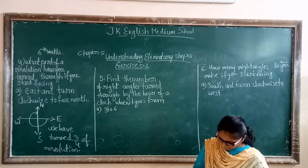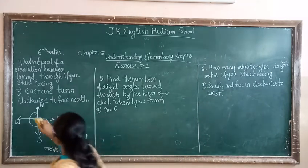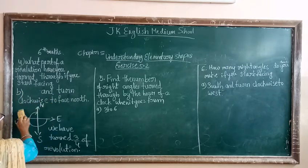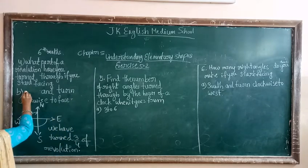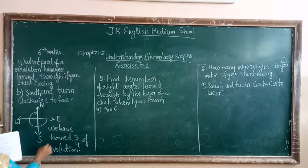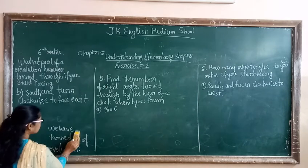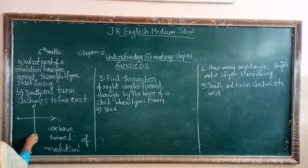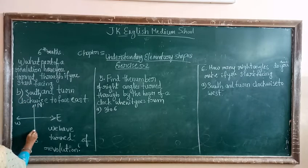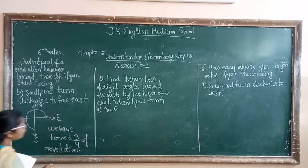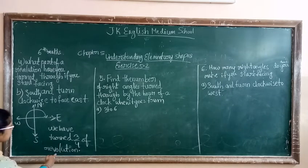The second one: what is the question? South and turn clockwise to face east. So from south, clockwise to face east — it passes three directions, meaning this is again three-fourths of a revolution. Three-fourths of revolution. This is the answer.